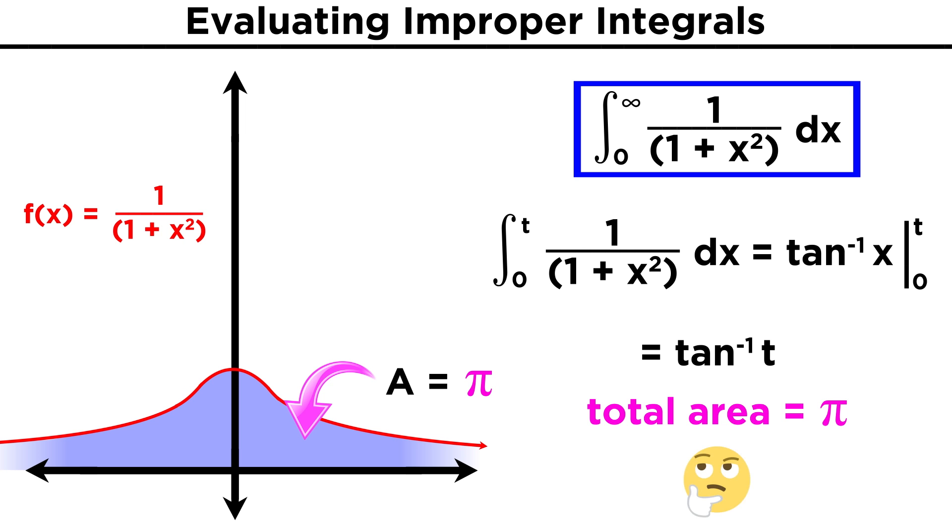Apart from being impressed that this integral from negative infinity to positive infinity yields a finite number, we might also be quite astonished that this number is pi. We are used to seeing pi when dealing with circles, and here there is no circle to be found, just another example of the stunning beauty and mystery that can be found in mathematics.